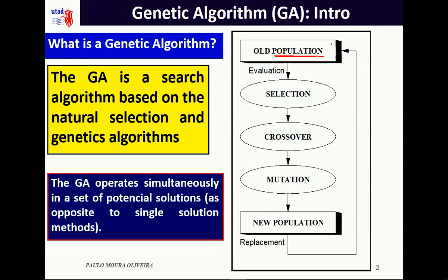We start with a set of potential solutions — we call it the population. Then we evaluate all the elements of the population, all the chromosomes, in the context of a problem. Then we have the three main operators in the GA: selection, crossover, and mutation.